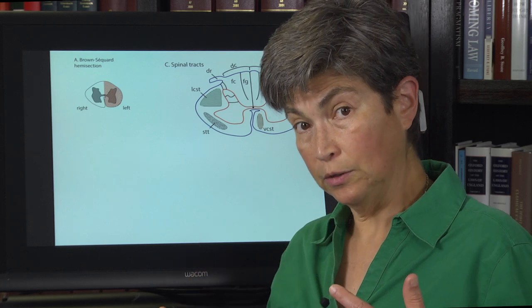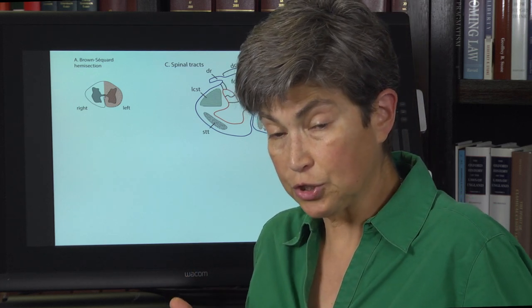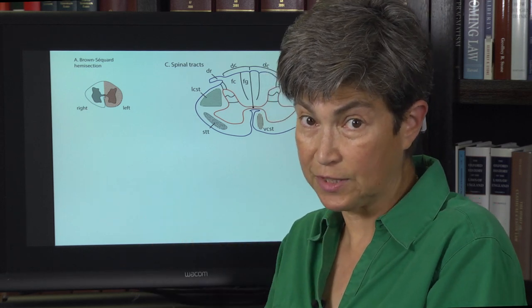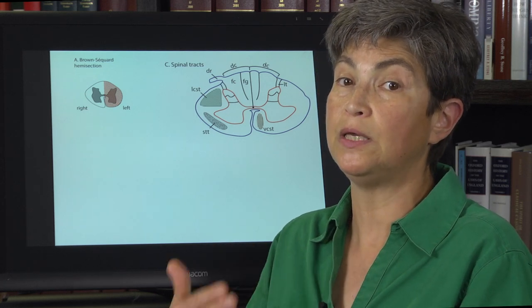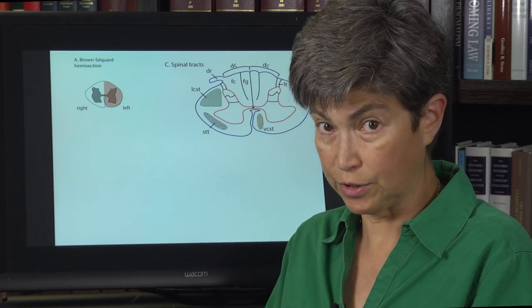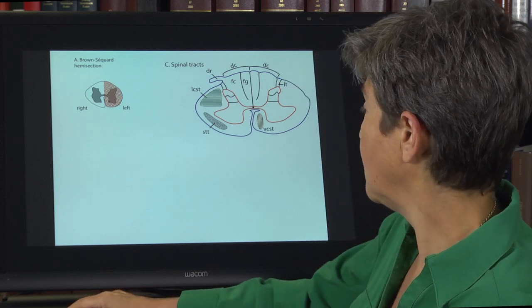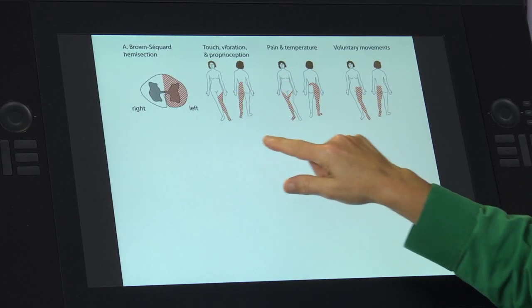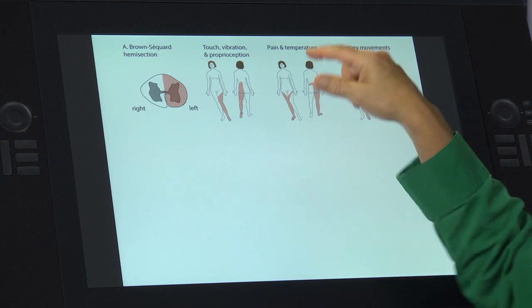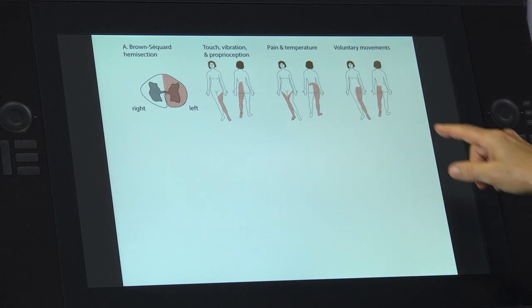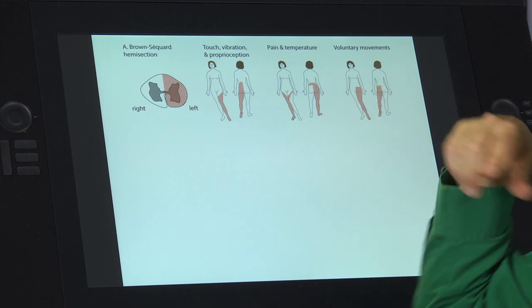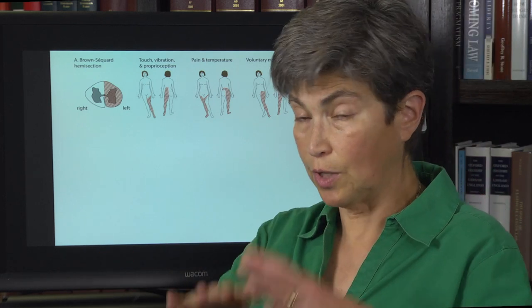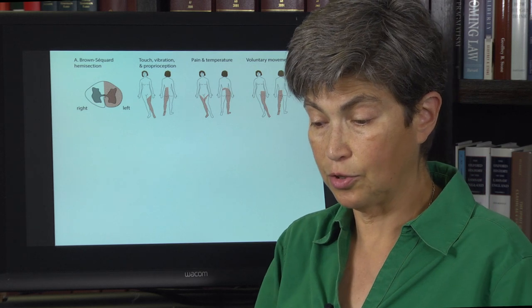What's going to happen to motor control? Everything served by segments below the level of lesion will, on the same side as the lesion — on the left side — no longer be able to be voluntarily controlled by the cortex. That is all schematized here: ipsilateral loss of touch, vibration, and proprioception; contralateral loss of pain and temperature with the exception of the level of the lesion where it's bilateral; and then an ipsilateral loss of voluntary movement of the limbs.